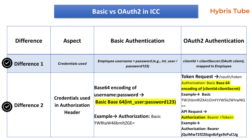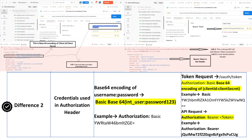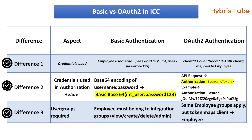In OAuth2 authentication, we use the request header as authorization colon bearer of access token. How to generate that access token, I will explain shortly. In basic authentication, the employee must belong to the integration groups — which groups those are, I will explain in some time. Similarly, in OAuth2 authentication, we also need the same user groups.